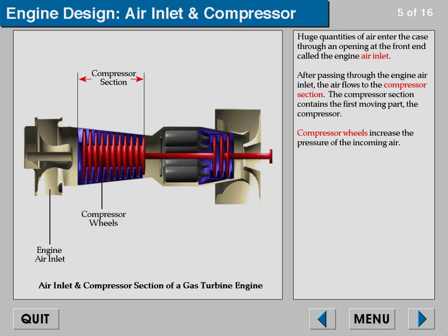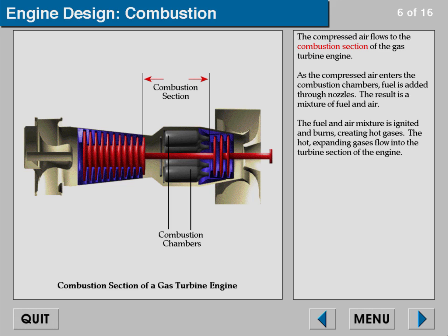Huge quantities of air enter the case through an opening at the front called the engine air inlet. After passing through the engine air inlet, the air flows to the compressor section. The compressor section contains the first moving part — the compressor. Compressor wheels increase the pressure of the incoming air.